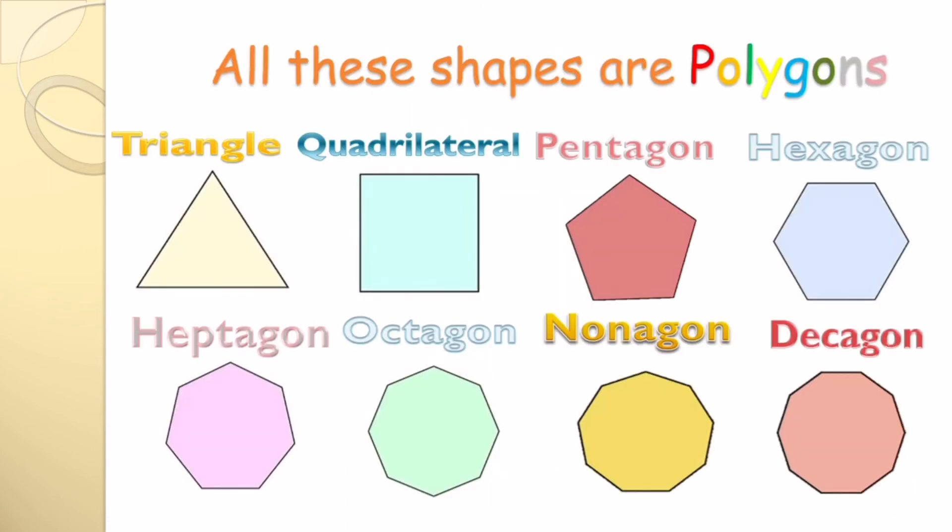All these shapes are polygons: triangle, quadrilateral, pentagon, hexagon, heptagon, octagon, nonagon, decagon. These are all regular polygons because all of their sides are equal.